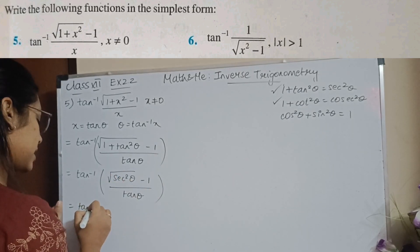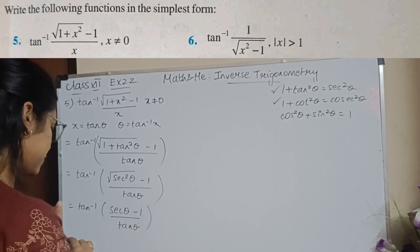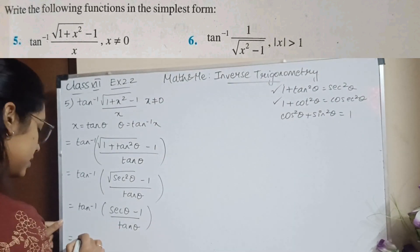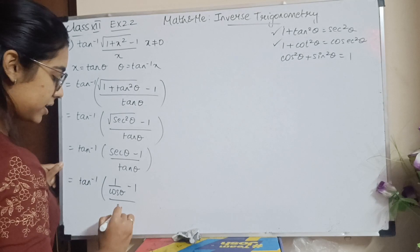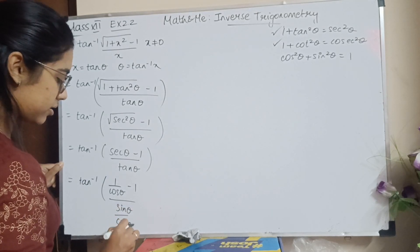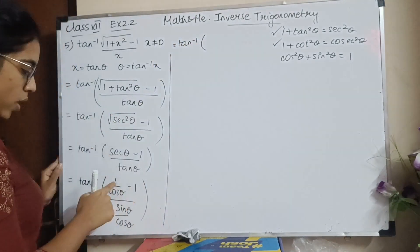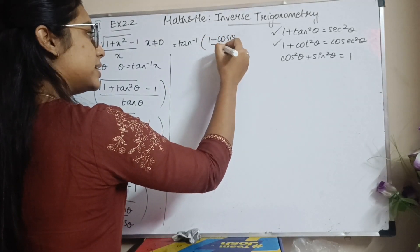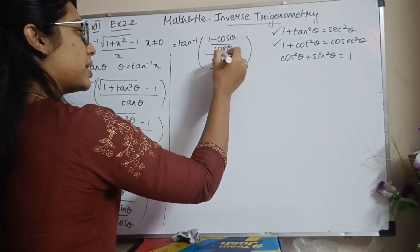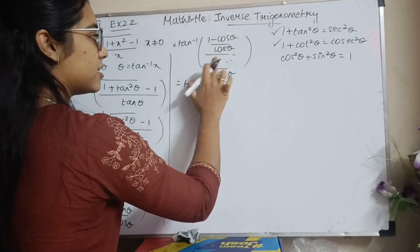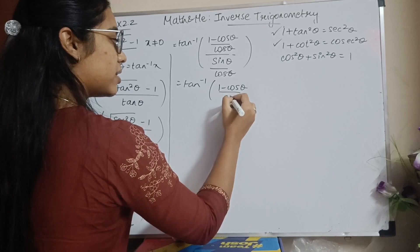Now simplify (secθ - 1)/tanθ. Write secθ = 1/cosθ and tanθ = sinθ/cosθ. So we get tan⁻¹[(1/cosθ - 1) / (sinθ/cosθ)]. The cosθ in the denominator cancels, leaving tan⁻¹[(1 - cosθ) / sinθ].